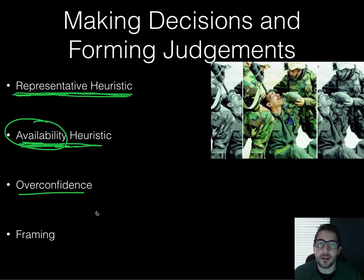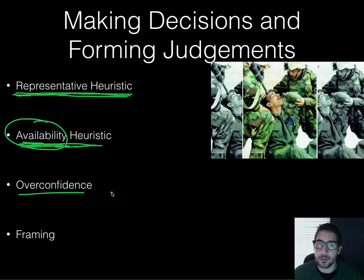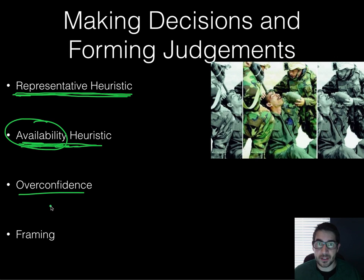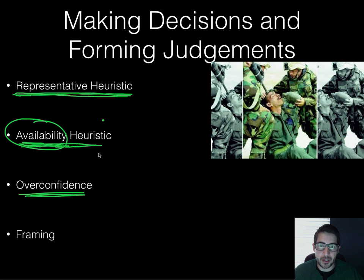Overconfidence: we tend to be overconfident about our decisions all the time. There's an idea called the better-than-average effect — we all think that we're better than average, but we can't all be better than average. That would defeat the definition of the word average. Overconfidence is a problem when we're forming judgments and decisions.